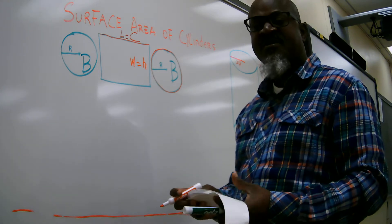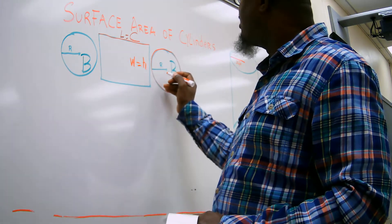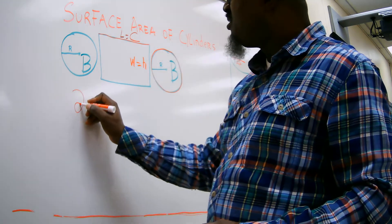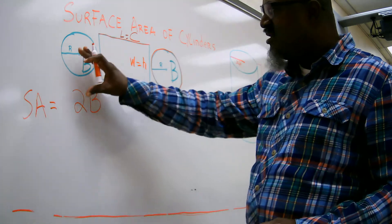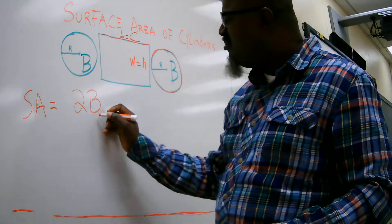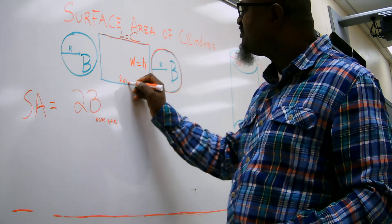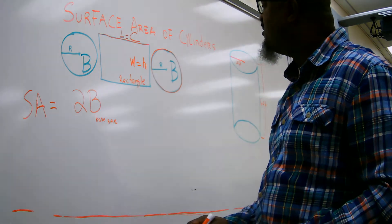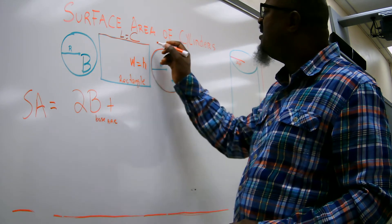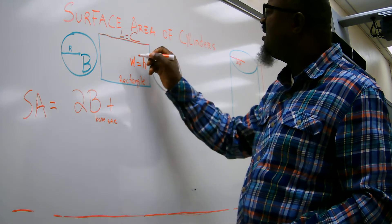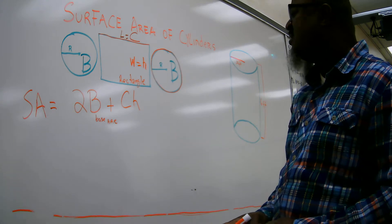We are going to see if we can come up with the formula. Remember this is the base, so we have two bases, giving us 2B. Remember B is for the base area. And we have a rectangle, so to find the area of the rectangle it is length times width. In this case that will be C times H, where C is circumference and H is height. That will give you the total surface area of the cylinder.